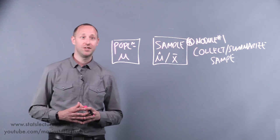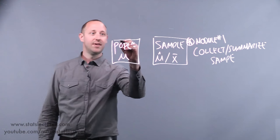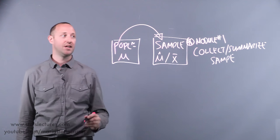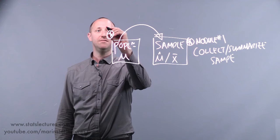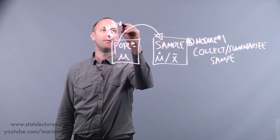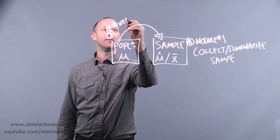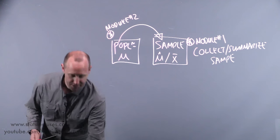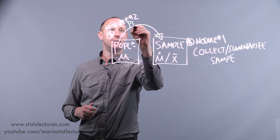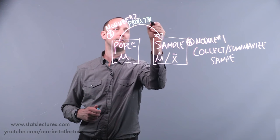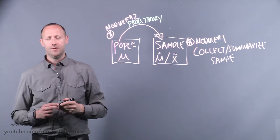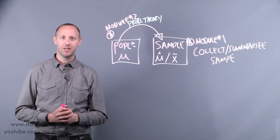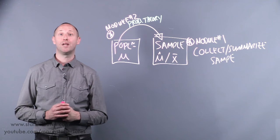Courses usually then move into a section where we're talking about: if we know the truth for the entire population, what sorts of things can show up when we collect a sample of data? In our course, we're going to cover this in module two. These ideas are what get called probability theory — if we know the truth for the entire population, what sorts of things are likely to show up when we collect sample data.